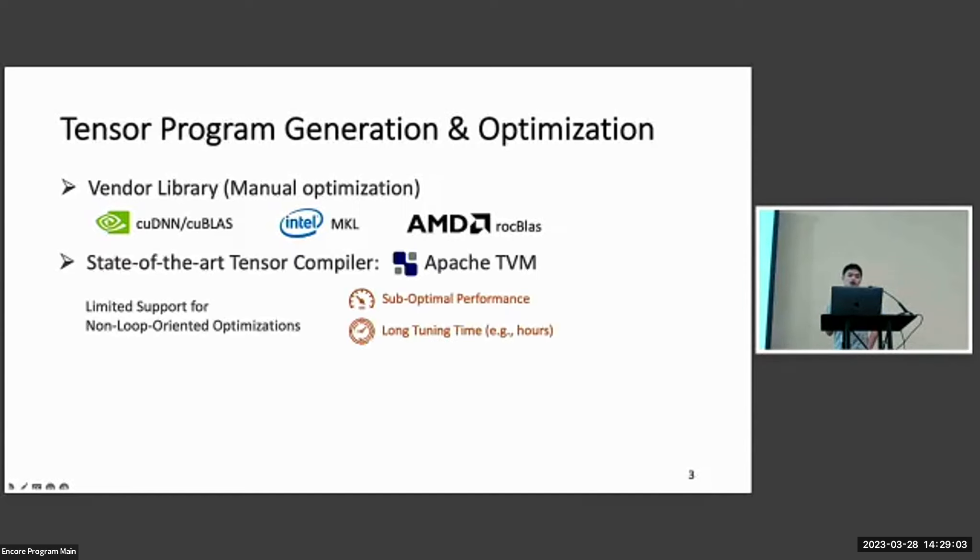To address this limitation, tensor compilers are proposed, such as TVM, to automatically generate the tensor programs and tune the performance. However, one limitation of TVM is that it cannot have good support for non-loop-oriented optimizations, which makes it have suboptimal performance and long tuning time.